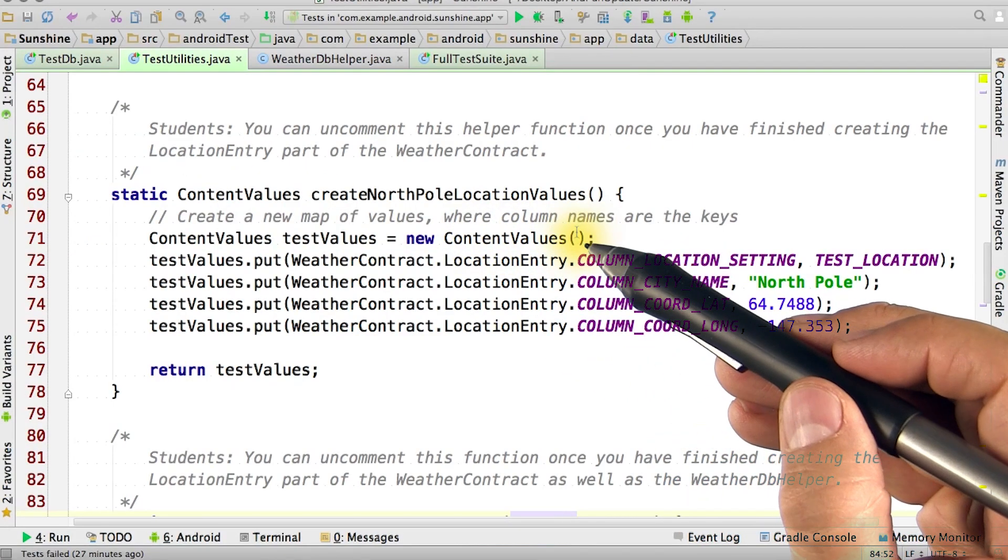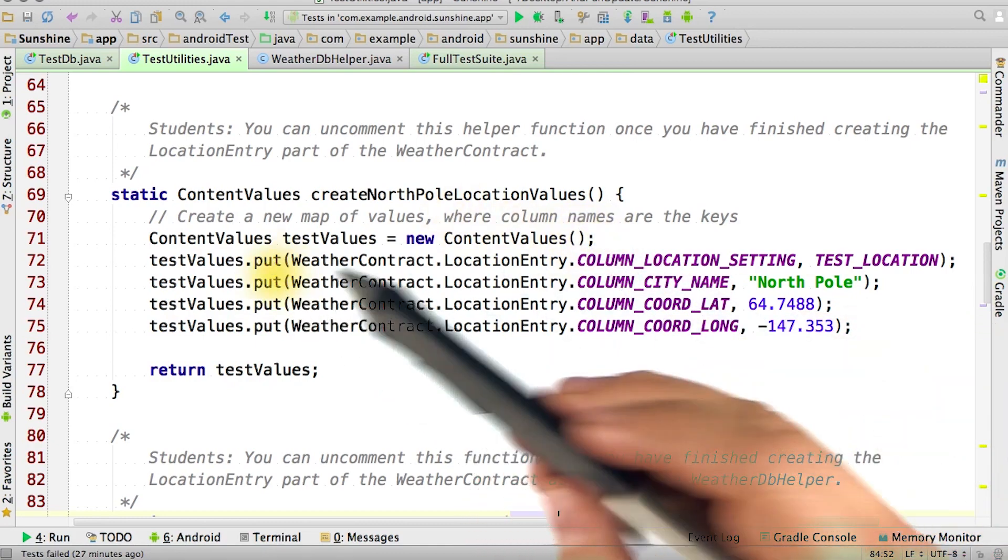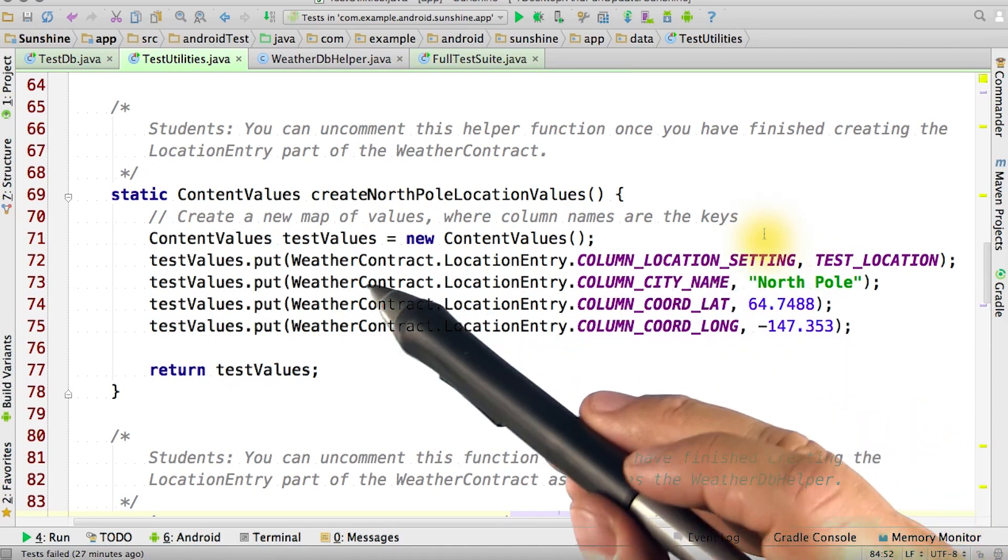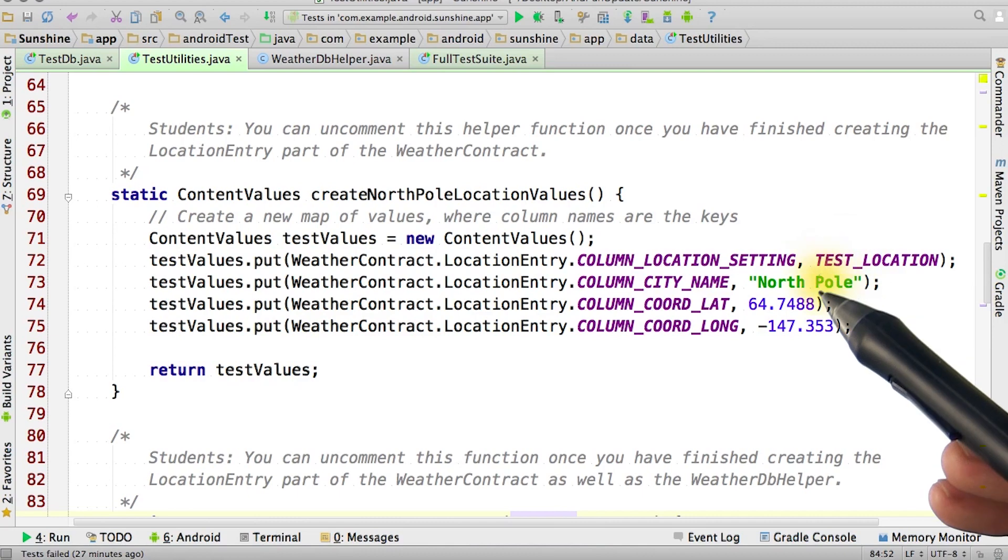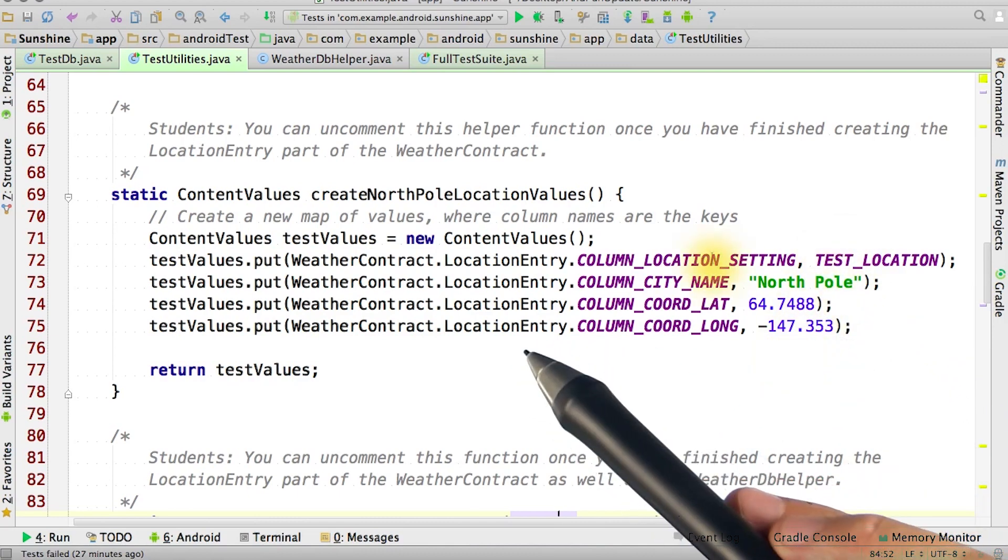Content values contain a set of key value pairs. You put a key string associated with the value into the content value set. The key strings contain the names of columns in your database. The value can contain many different data types. Content values are used to write to databases in Android.